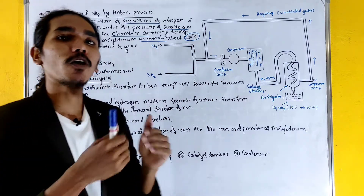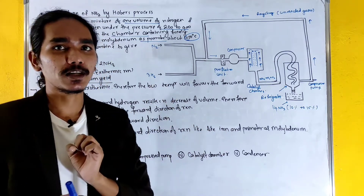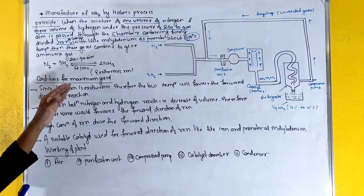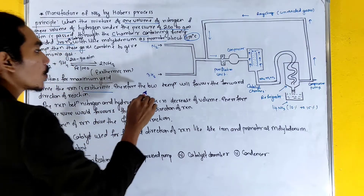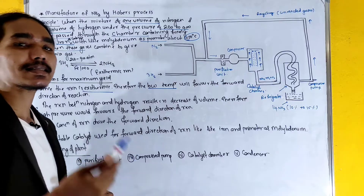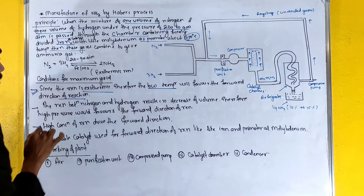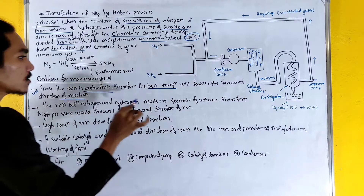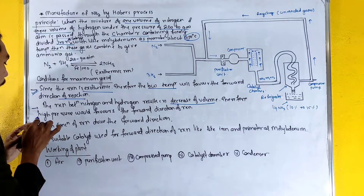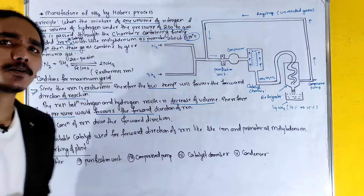This reaction is exothermic, meaning heat is evolved or released. The temperature is lowered in the system. For maximum yield, since the reaction is exothermic, low temperature favors the forward reaction. Also, the reaction between nitrogen and hydrogen results in a decrease of volume, therefore high pressure favors the forward direction of reaction.